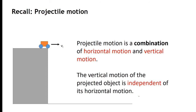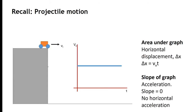In other words, projectile motion is a combination of horizontal motion and vertical motion — two one-dimensional motions that we combine to analyze projectile motion. The vertical motion of the projected object is independent of its horizontal motion. You can treat both horizontal and vertical motion as two independent problems, each having nothing to do with the other. The horizontal motion, when you plot Vx versus time, looks like a straight horizontal line with no slope.